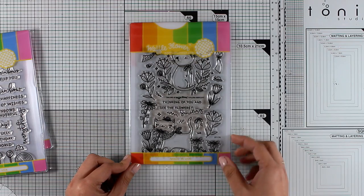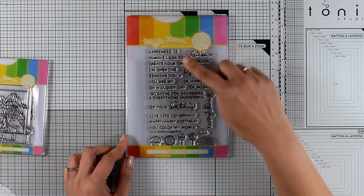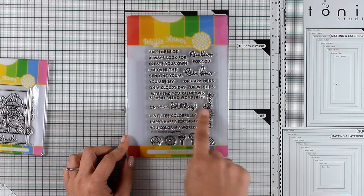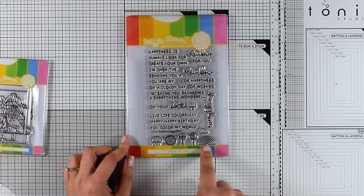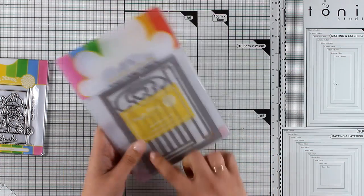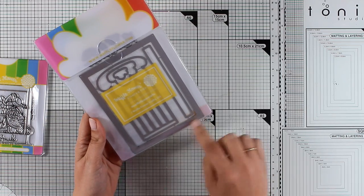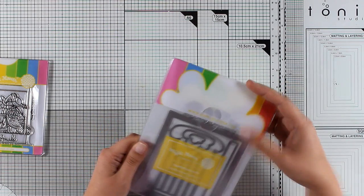This is called Rainbows. It's a great stamp set because it gives you lots of options of sentiments that you can mix and match together to create your very own sentiments. It also gives you adorable little images such as cupcakes and cookies and lollipops and rainbows.